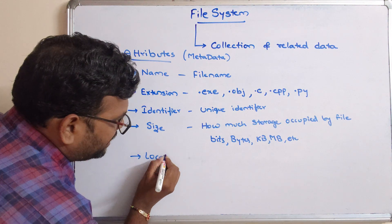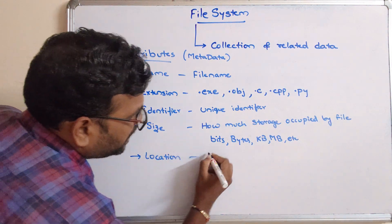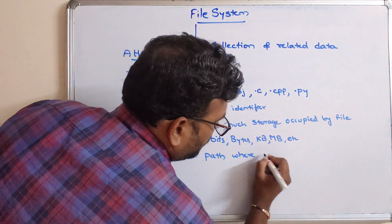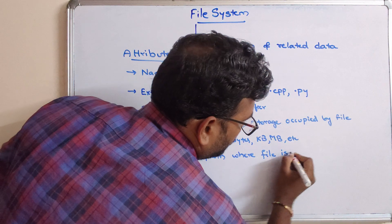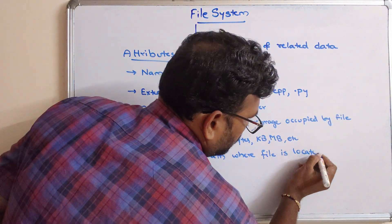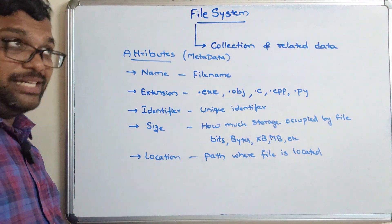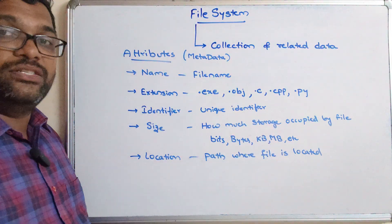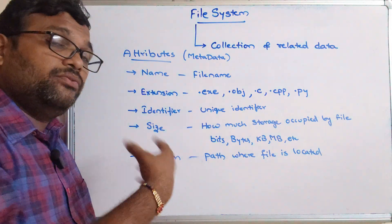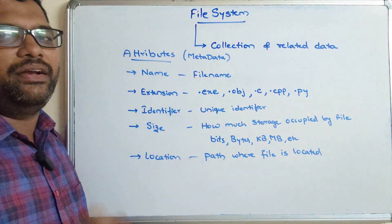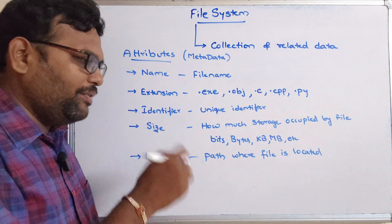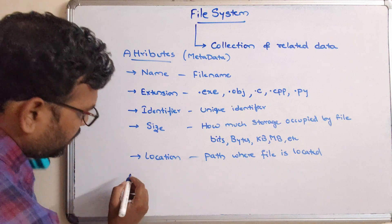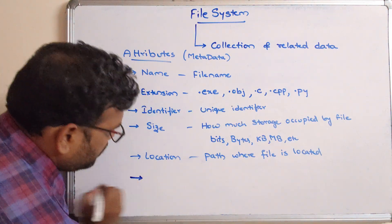The next attribute is the location — a path where the file is located. Files will be stored in secondary storage, and the path tells us where the file is located. If we know the location of the file, we can easily retrieve the data whenever it is required. So every file will have a location. So far: name, extension, identifier, size, and location.